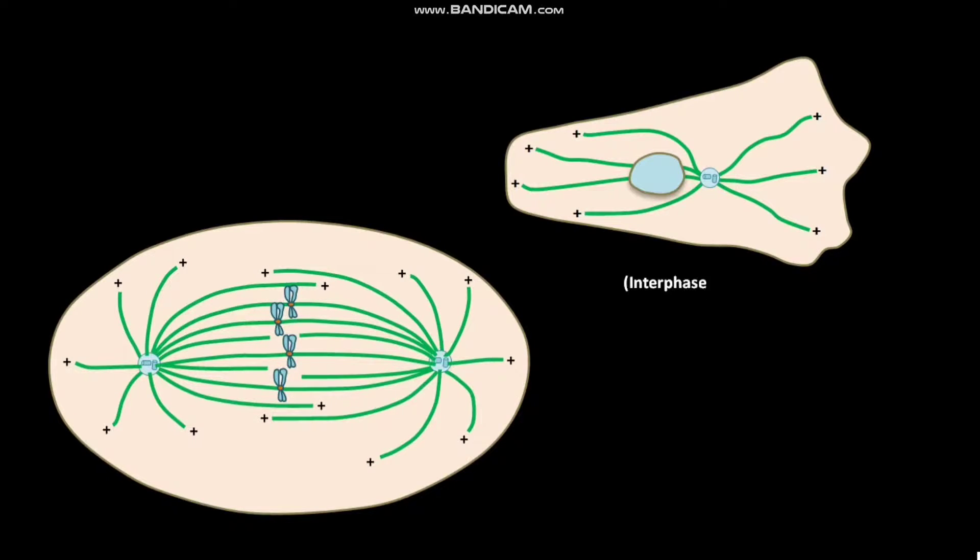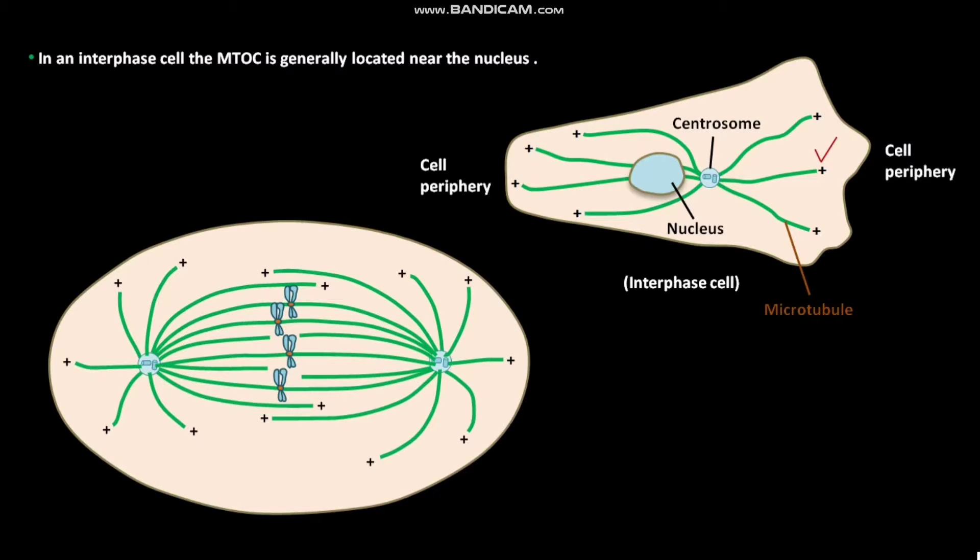In an interphase cell, the MTOC is called the centrosome. This blue oval is the nucleus of the interphase cell. The MTOC is generally located near the nucleus. The centrosome produces a radial array of microtubules with their plus end toward the cell periphery.